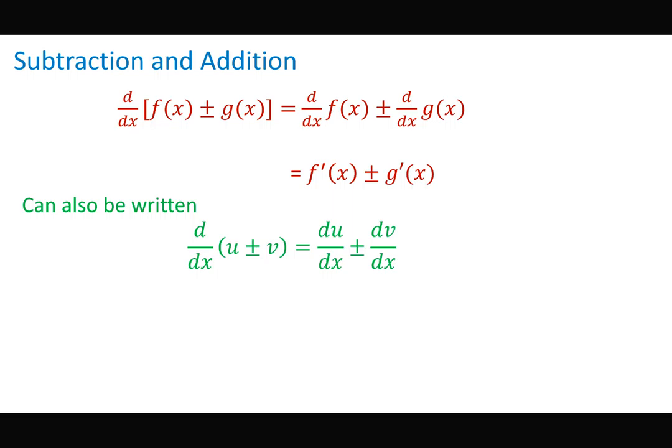With u and v notation: if my functions are u and v being added together, I can say du/dx plus dv/dx, or I can do it as subtraction. These two notational forms come from the two people credited with the discovery of calculus. One used du/dx and dv/dx notation, and the other used prime notation — that's the only reason they're different, but they mean the same thing.